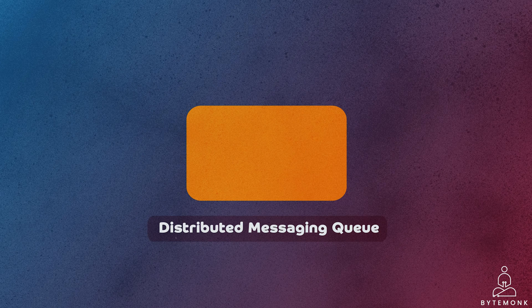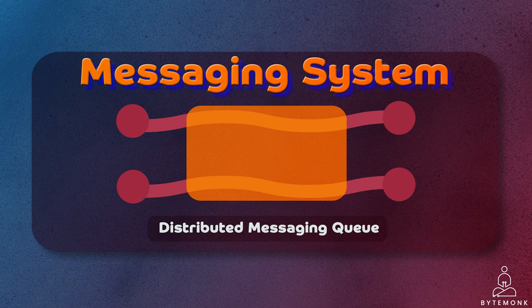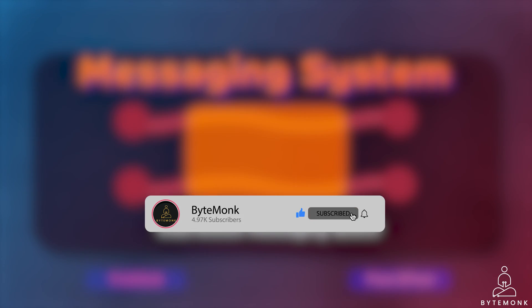Distributed messaging queues are a key component in building scalable and reliable distributed systems. They allow multiple services to communicate and exchange messages, even when running on different servers, which is especially applicable in microservices architecture and big data processing. In this short video, I'll first define the basics of messaging systems, the types of messaging systems, and understand the distributed messaging queue with real-life examples.